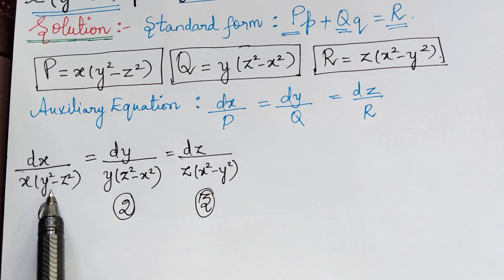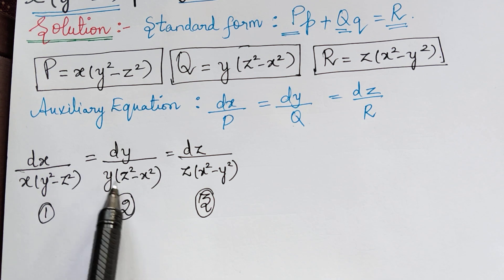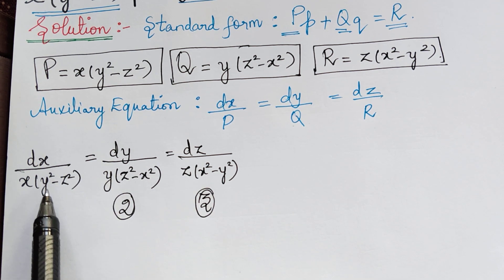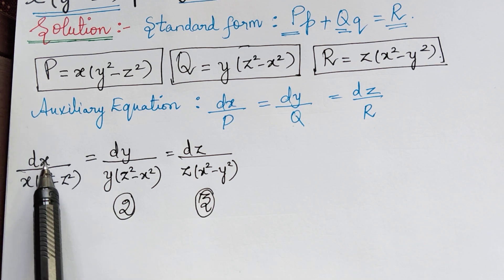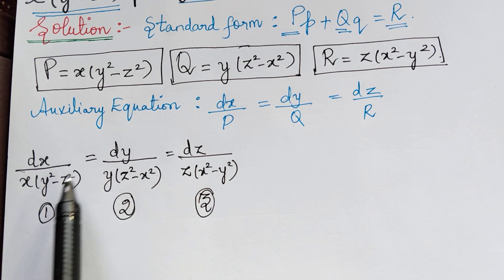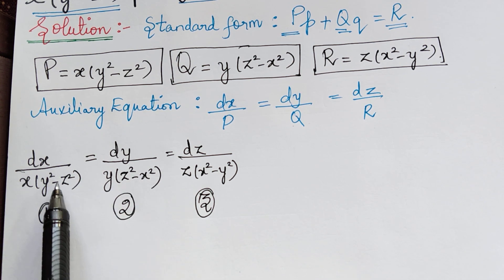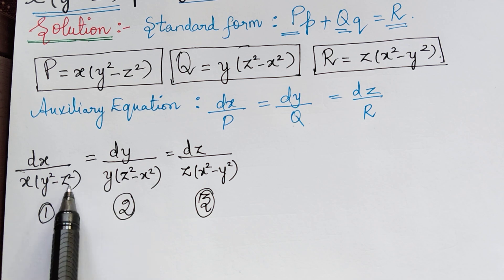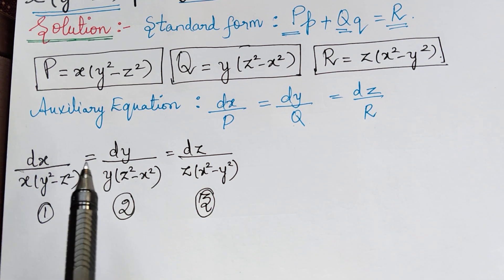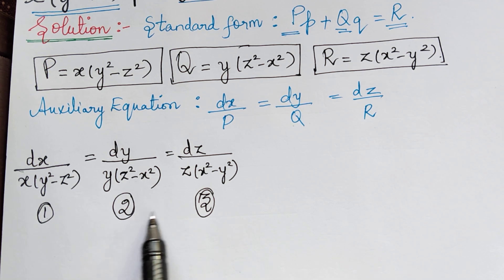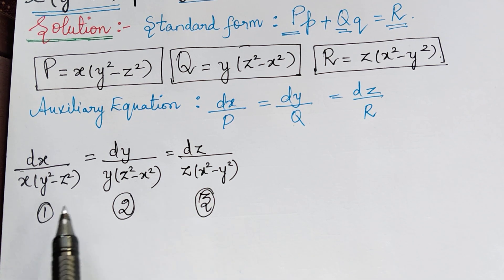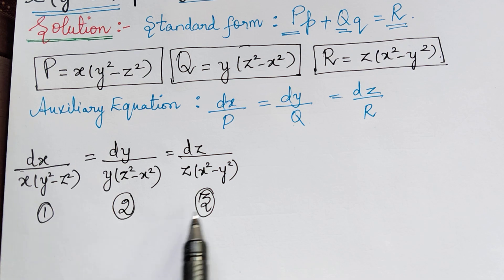If you compare the ratios, we won't be able to use the method of grouping, because for example comparing ratios 1 and 2, you have dx and dy in the numerator but three variables x, y, and z in the denominator. When you have three such variables, you won't be able to integrate by separating the variables. So we have to use the method of multipliers. Similarly, ratios 2 and 3, and 1 and 3, have the same issue.